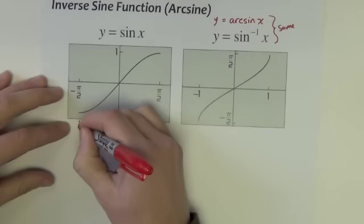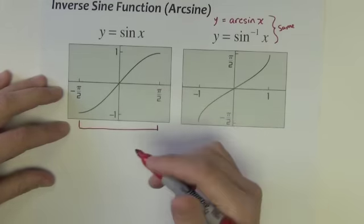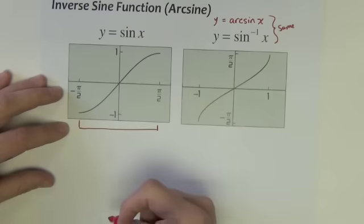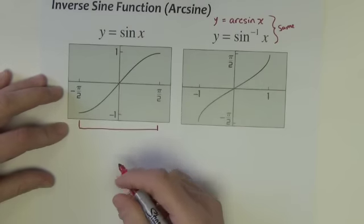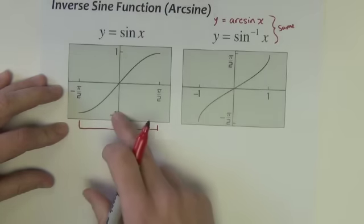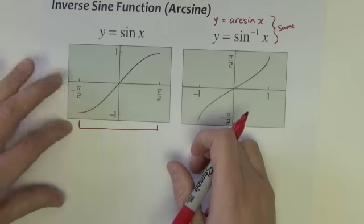If we only look between negative and positive pi over 2, and we don't go beyond those marks, well, then it passes a horizontal line test everywhere. And it therefore has an inverse, just this little piece of it has an inverse. And the inverse of this function is what we call sine inverse, or arc sine.